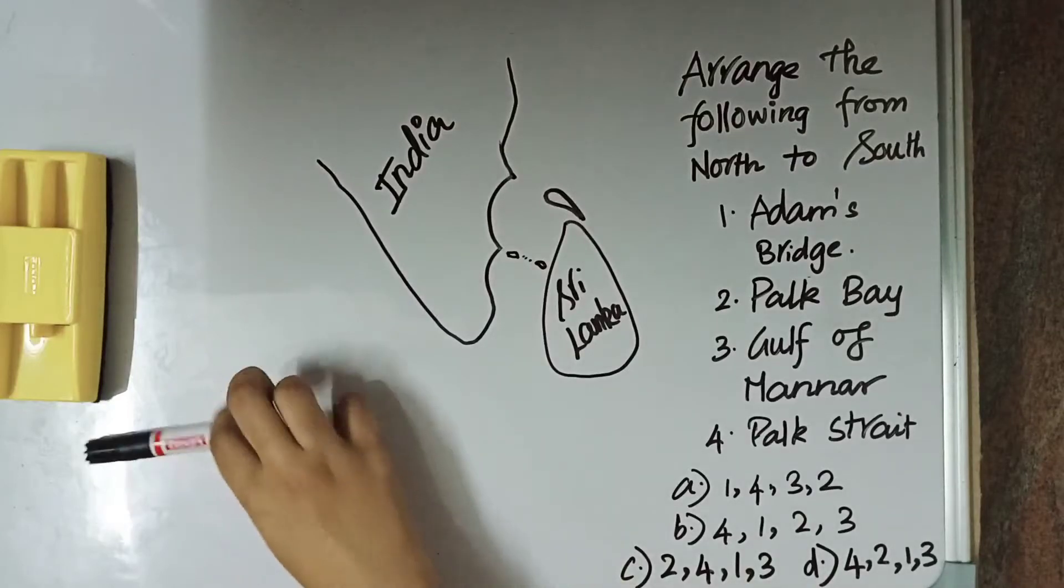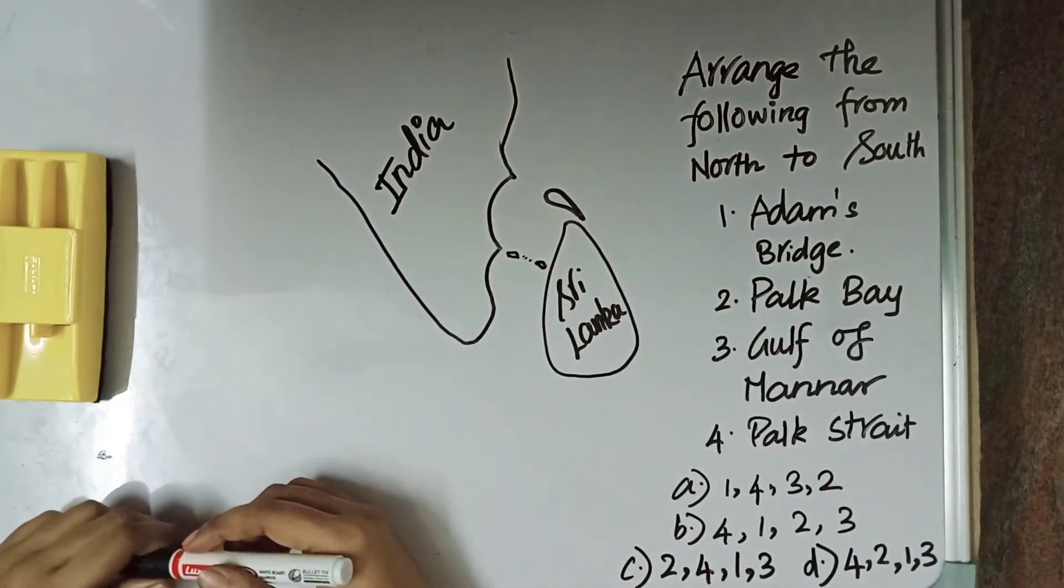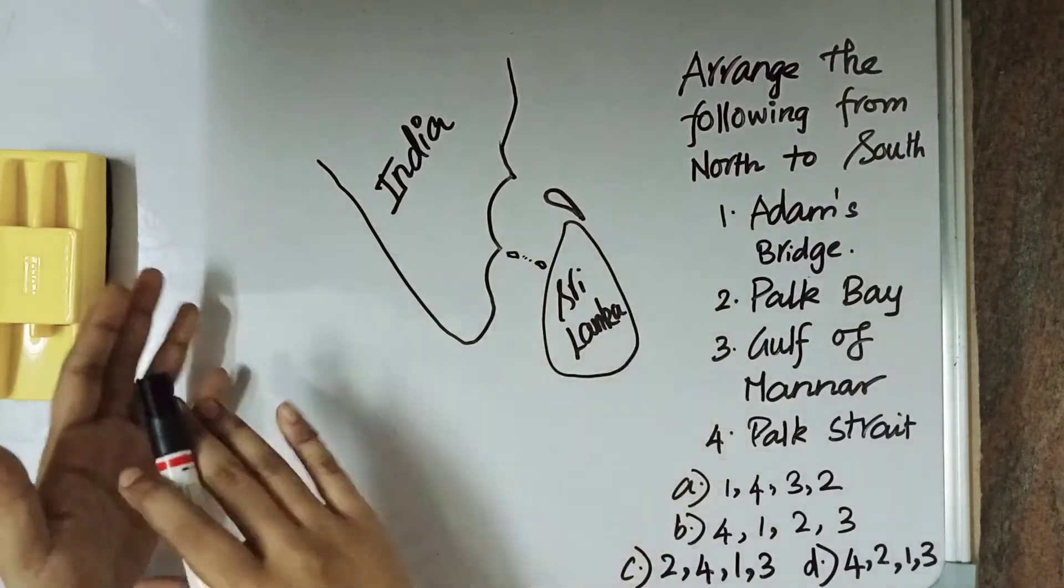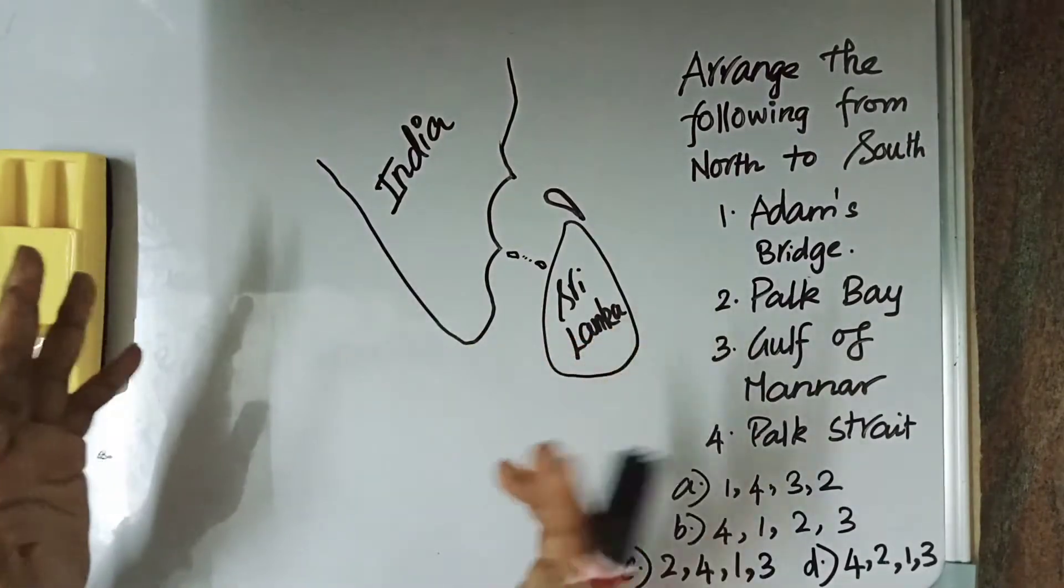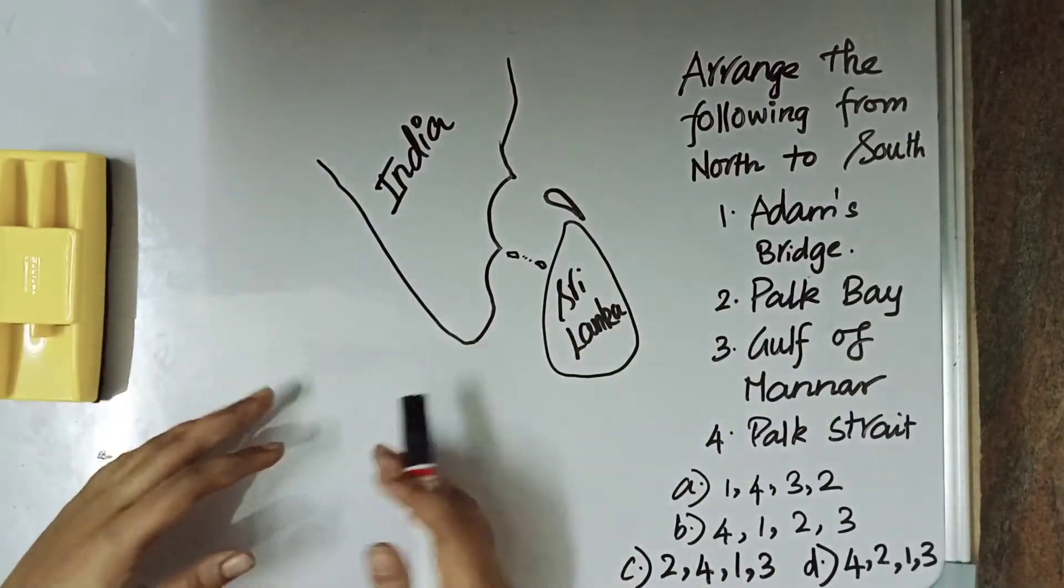Hi, hello viewers, it's Milo Minute IS Academy and today we are going to see about Park Strait, Park Bay and Adams Bridge and Gulf of Mannar.